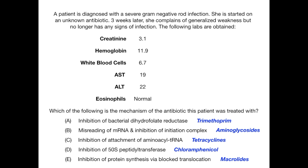For choice A, trimethoprim, the classic adverse drug reactions are megaloblastic anemia, leukopenia, and granulocytopenia. These are mostly lab-based findings, and there's no evidence of any of them in the vignette or labs. Therefore, choice A is incorrect — it's not trimethoprim and not inhibition of bacterial dihydrofolate reductase.